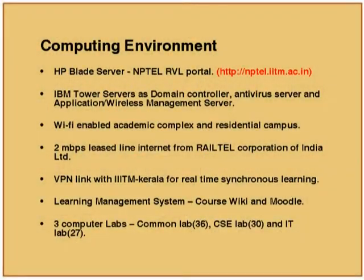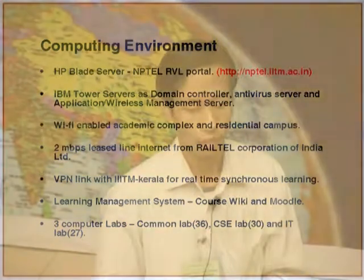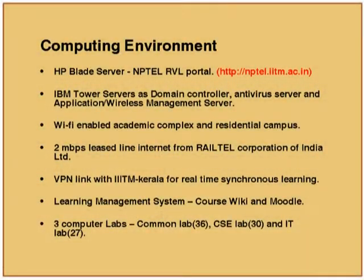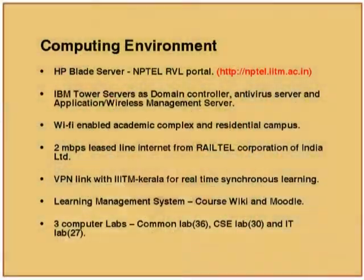We also have IBM Tower servers — one is a domain controller, one is an antivirus server, and we have an application file server and a wireless management server for the Wi-Fi network. Our academic complex and residential campus are both Wi-Fi enabled. The residential campus is about one kilometer from the academic complex, so we have routers and wireless bridge devices. We have a 2 Mbps leased line internet from Rail-Tel Corporation of India, implemented through the Railways optical fiber network.